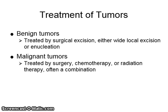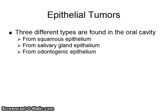Benign tumors are treated by surgical excision, either a wide local excision or enucleation if they are encapsulated. Malignant tumors are treated by surgery, chemotherapy, or radiation therapy, and often a combination. There are three different types of epithelial tumors found in the oral cavity: from squamous epithelium, from salivary gland epithelium, or from odontogenic epithelium.